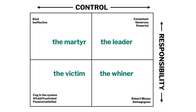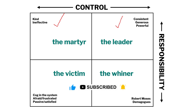Let's talk about this matrix — control and responsibility. As you can see, there are four quadrants. First is the martyr, someone who does not have control but has a lot of responsibility. Then there is a leader who has the right mix of control as well as responsibility. You have the whiner who has least responsibility but a lot of control. And then there is a victim who has negligible responsibility and control.